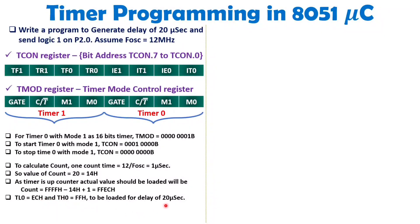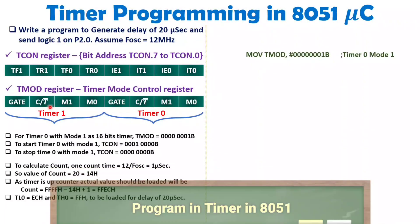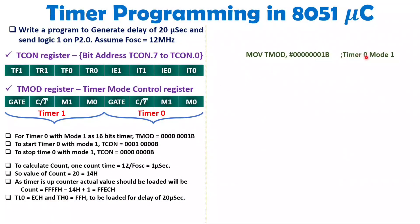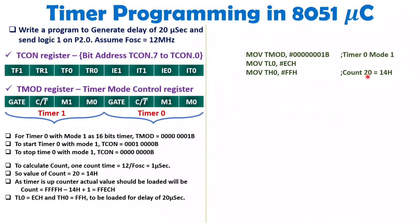Once you load this value, it will generate a delay of 20 microseconds. In the program, first load the TMOD register — which defines which timer, which mode, and timer vs. counter — as 01H, meaning seven zeros followed by a 1 in binary. Then load the count value: TL0 is loaded with ECH and TH0 is loaded with FFH, loading the count for 20 microseconds. Then start the timer by setting TCON to 0001 followed by four zeros, which starts Timer 0.